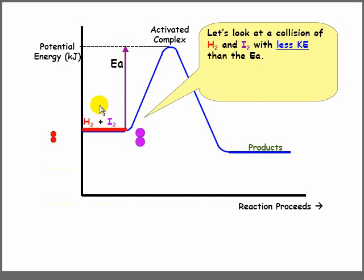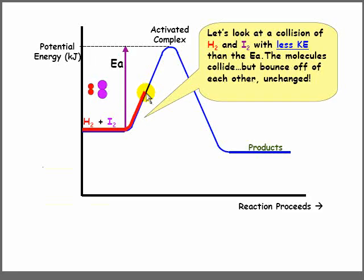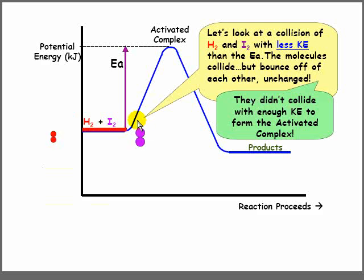Let's look at a case where H2 and I2 collide with less kinetic energy than the activation energy. The potential energy that these molecules have is indicated by the red line. Notice as they get closer to each other, their potential goes up and they collide. But they simply bounce off of each other unchanged, and their potential goes down again. This collision was not successful because they didn't collide with enough kinetic energy to form the activated complex.